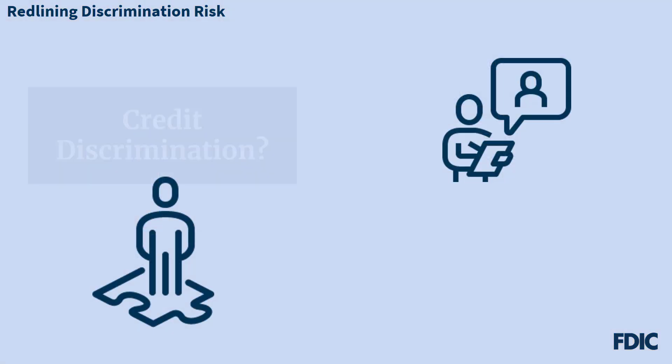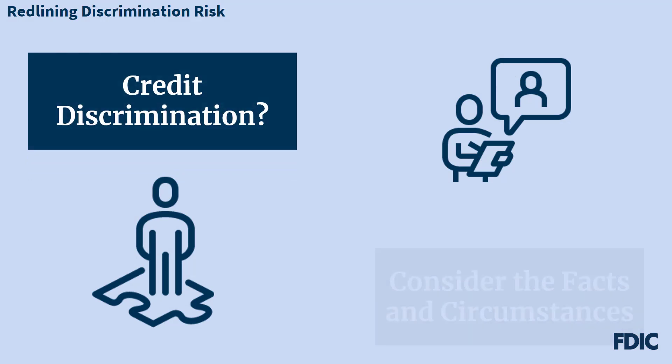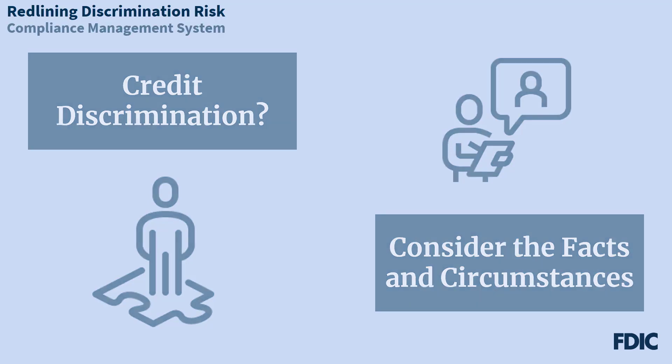Now that we've gone through the redlining risk indicators and several examples, we want to note that specific findings of illegal credit discrimination by redlining would depend on the facts and circumstances of the situation at hand. Now let's talk about how a bank's compliance management system, or CMS, could help address fair lending risk.